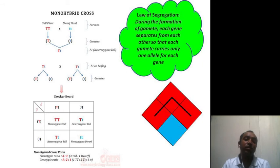So this monohybrid cross led to the proposal of the law of segregation, in which during the formation of gamete each gene separates from each other so that each gamete carries only one allele for each gene. Alleles are basically the different versions of a gene.